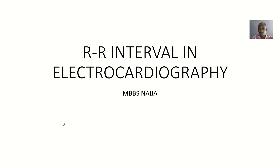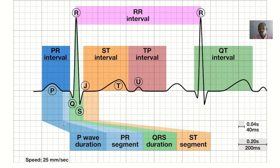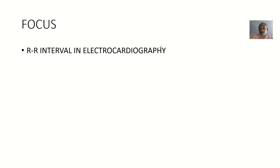The R-R interval is what we'll be studying today, which is also a part of the ECG tracing. The R-R interval is the period which it takes from one R in a QRS complex to another R in the nearest QRS complex — that's the R-R interval.